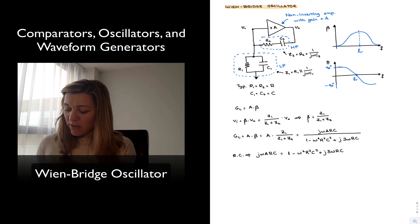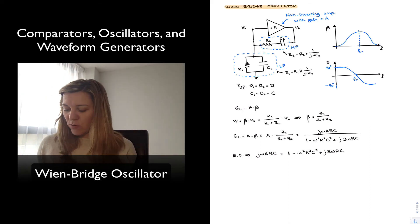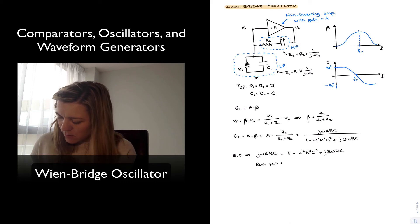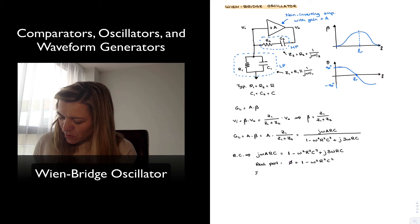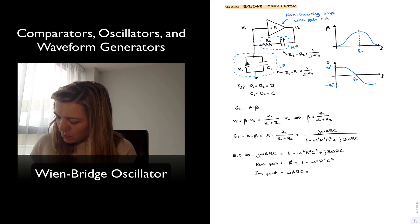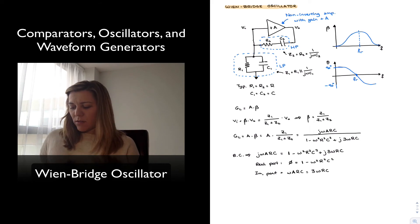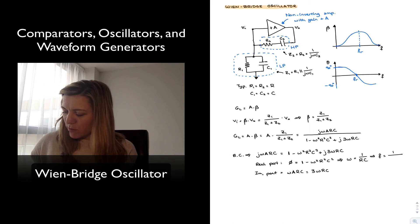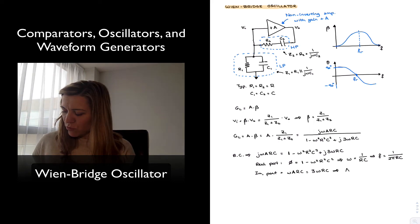Since I have an equation, I can equate real parts from both sides. The real part on the left-hand side is 0, and the real part on the right-hand side is 1 minus ω²R²C², which must equal 0. Equating imaginary parts, ωA·RC must equal 3ωRC. By solving the real part equation, I get omega equals 1 over RC, or in terms of frequency, f equals 1 over 2πRC.